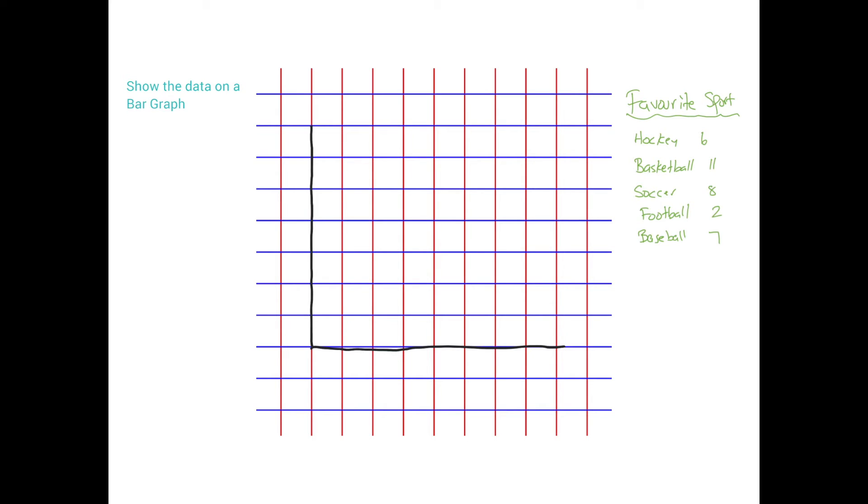So I'm going to use a different color now. Let's use green. So this is called favorite sport. The sports will go at the bottom in this graph. And then number of students, because I asked students for this.